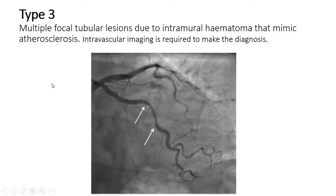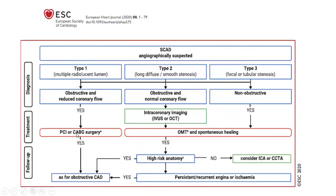The SCAD continues to the distal segments of LAD. Type 3 has multiple focal tubular lesions due to intramural hematoma that could mimic atherosclerosis. In these cases, intravascular imaging is required to make the diagnosis. Type 3 is the least common.